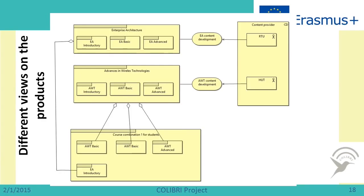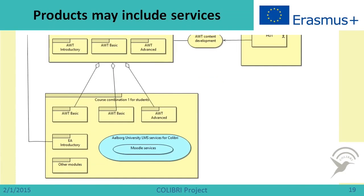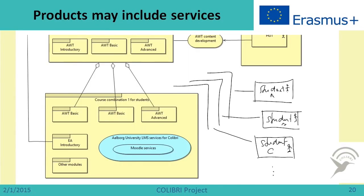We can use different views on the products. For example, there can be some course combinations for one student, which include Enterprise Architecture Introductory and all three parts from Advances in Wireless Technology. We can represent choices for students and show different services which go together with the products. If a student takes these modules, they use Aalborg University Learning Management System services for Colibri, and these services include Moodle services.